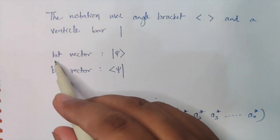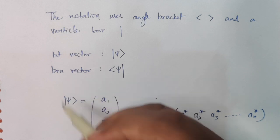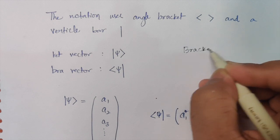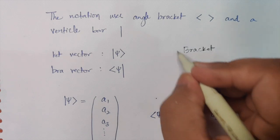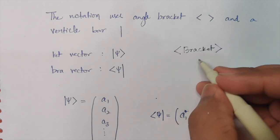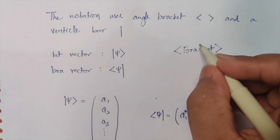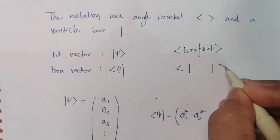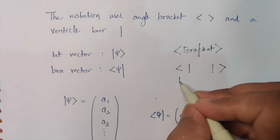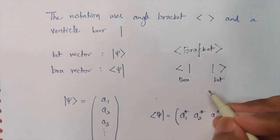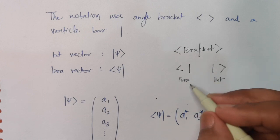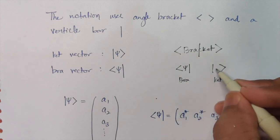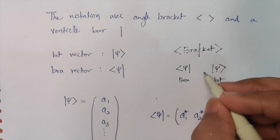We have two types of them — it has been divided into ket vector and bra vector. I'll explain how you can remember it. Just remember the word 'bracket.' Now just draw it in this way, and make a vertical line in between at the place of the C. This particular part will become the bra vector and this particular part will become the ket vector. You should also have a function inside it, like Psi or Phi or anything.